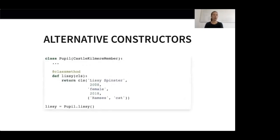This example shows how to create a class method for Lizzie, our main character. With this class method, we can create the Lizzie instance very easily by just calling Pupil.lizzie. The class method is decorated with a @classmethod decorator and uses an instance of the class to create the Lizzie Spinster instance. We could equally create class methods for other members like Luke Barry or our headmistress Miranda Mirren.